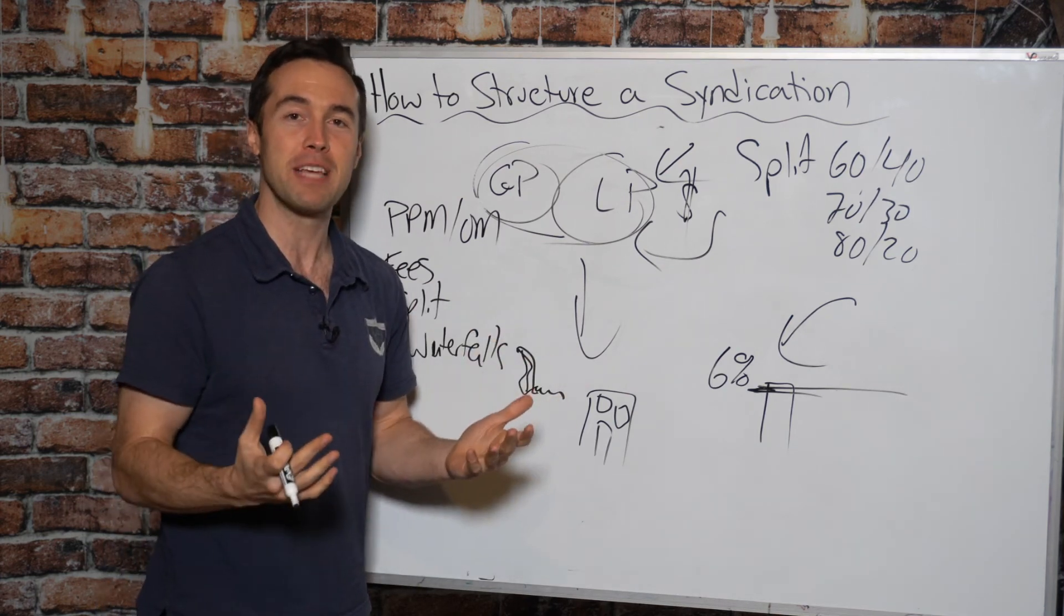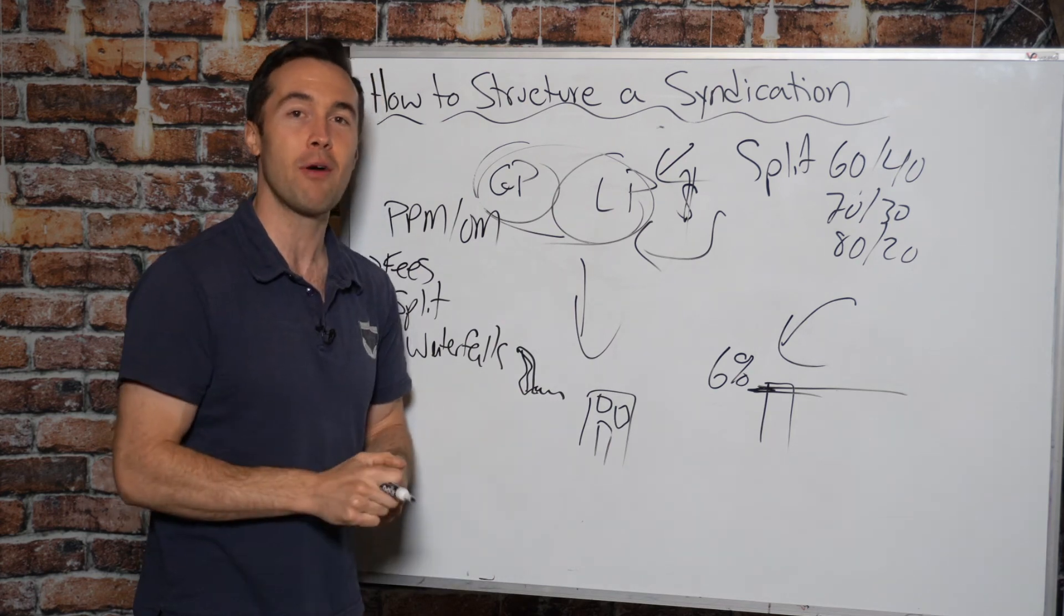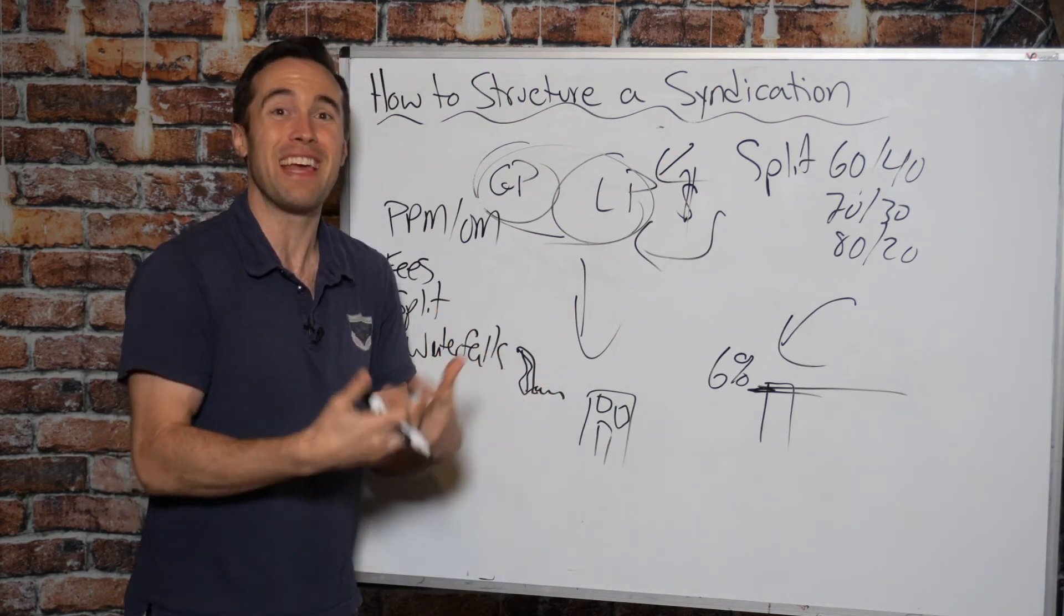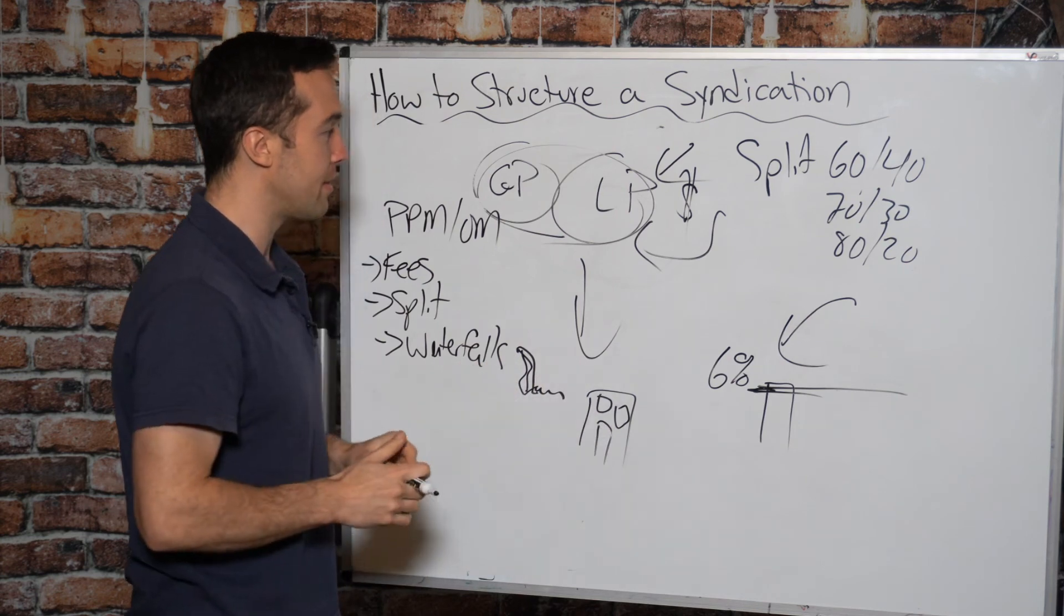Every syndication is going to be set up a little bit differently. But when it comes to subscription agreements, that's the final step. The investor signs that they agree to purchase X amount of shares in exchange for their equity injection or their equity investment. And then all that happens at that point is the funds get wired into the bank account and the deal, the syndication, the entity gets funded, and then you can then close on the deal.